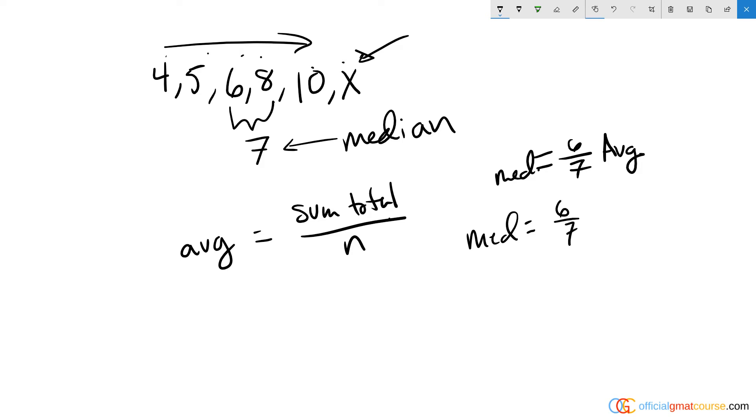What you'll notice here is that the sixes cancel out, typically a good indication that you're doing your math right, and what I now have is that the median equals the sum over seven.